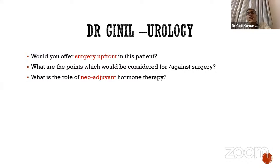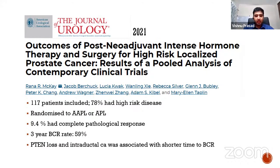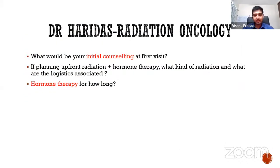There is one study that has looked at intense neoadjuvant hormone therapy for high-risk localized prostate cancer followed by surgery. They added apalutamide, abiraterone, prednisolone, and leuprolide and compared to the other group. They saw approximately 10% complete pathological response and a biochemical recurrence rate of around 59%, so there is some role of neoadjuvant hormone therapy in high-risk and locally advanced cases. Since we are erring towards radiation, Dr. Haridas, what would be the initial counseling and what kind of radiation would you offer?